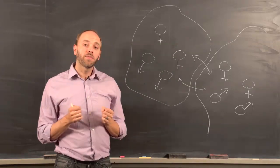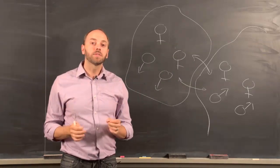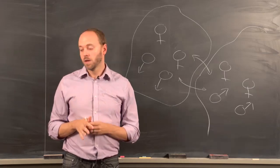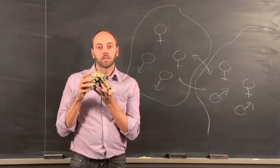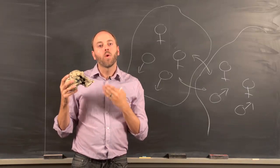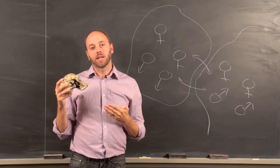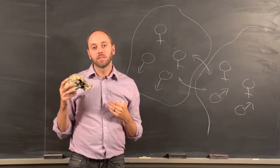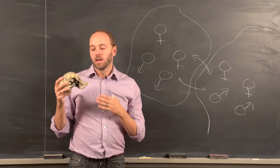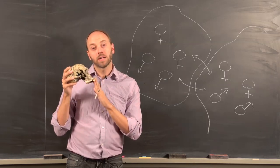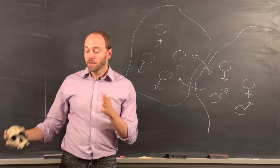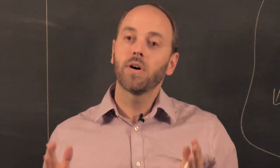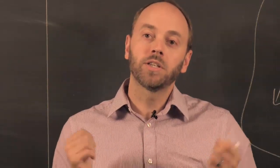When we think of the fossil record, species are often the fundamental unit we're thinking of. When we ask 'what is this?' we're asking what name do we attach to it — what genus and species is this? Is this Homo habilis? Is it Homo erectus? Or is it some other name altogether? As it turns out, species are a fundamental unit in biology, but they're also fundamentally challenging.